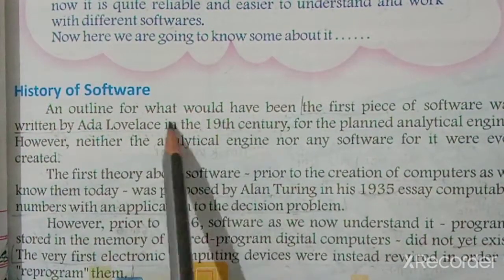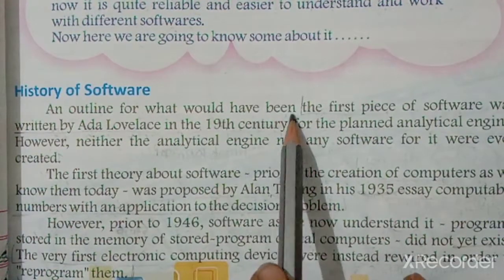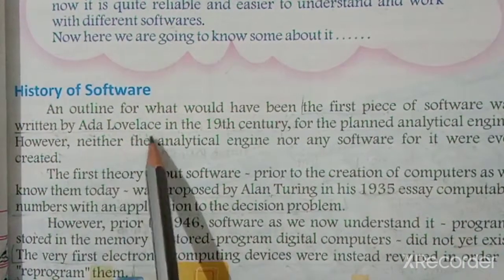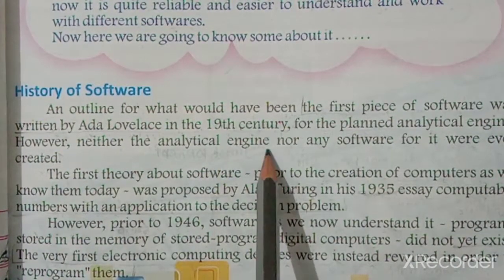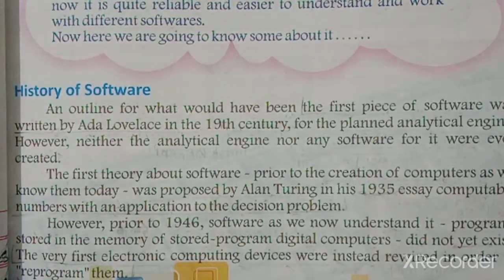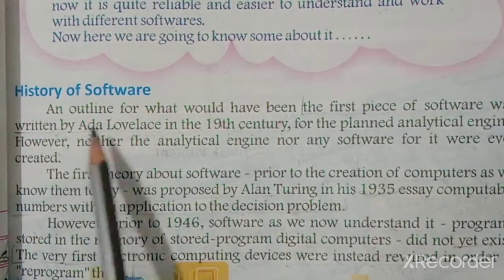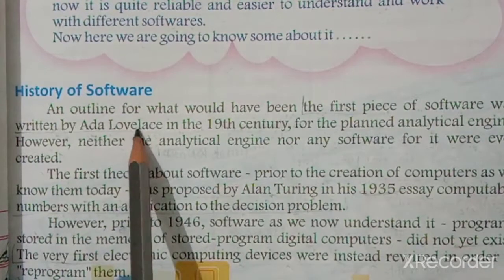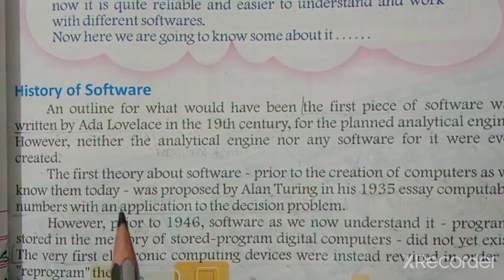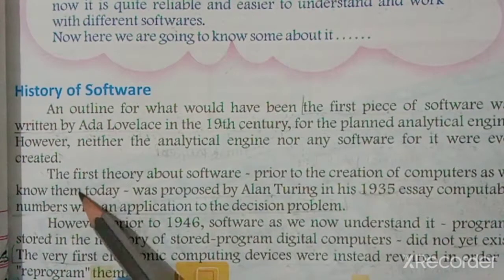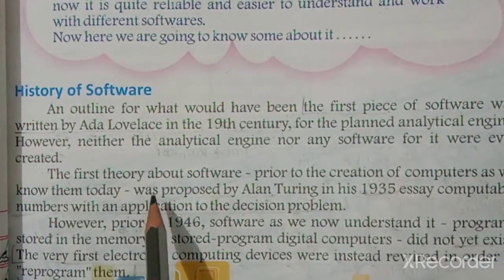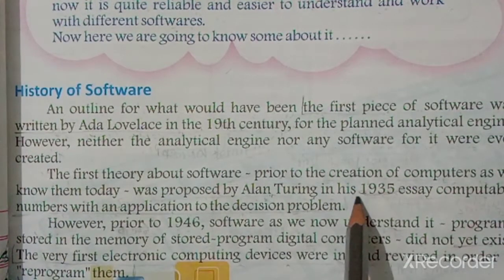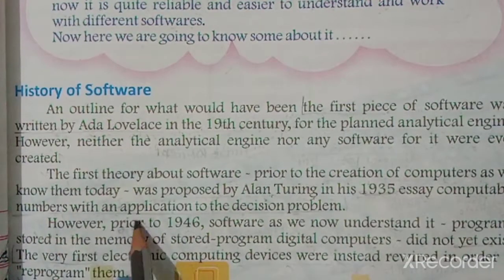The first piece of software was written by Ada Lovelace in the 19th century for the planned analytical engine. However, neither the analytical engine nor any software for it were ever created. The first theory about software prior to the creation of computers as we know them today was proposed by Alan Turing in his 1935 essay 'Computable Numbers with an Application to the Decision Problem.'